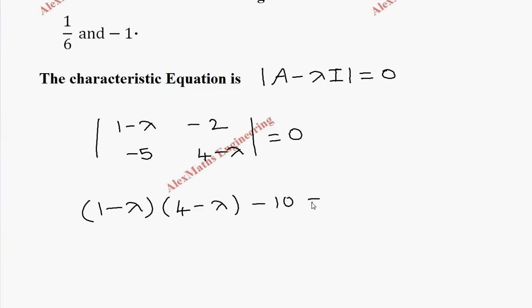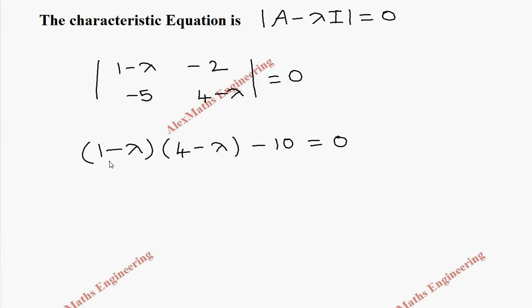Let's expand this. Multiply both elements: 4 minus lambda minus lambda minus 4 lambda plus lambda squared minus 10 equals 0. Rearranging, we get lambda squared minus 5 lambda minus 6 equals 0.